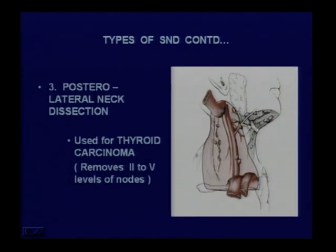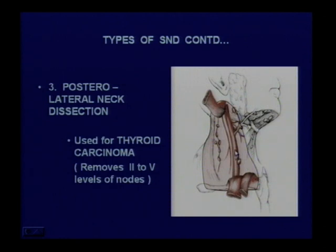The third type is posterolateral neck dissection — both posterior and lateral. You take out levels 2, 3, and 4 as well as the posterior group of lymph nodes, that is level 5 nodes present in the posterior triangle of the neck. This larger field is cleared in posterolateral neck dissection, and it is generally done for thyroid carcinoma — follicular and papillary carcinoma.